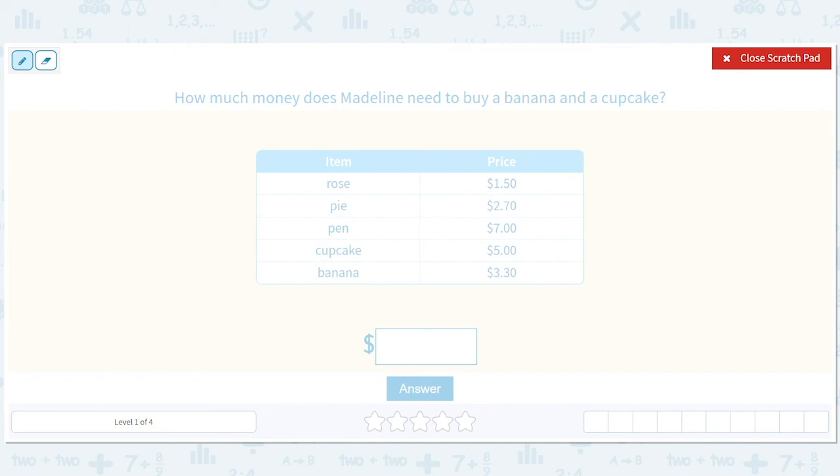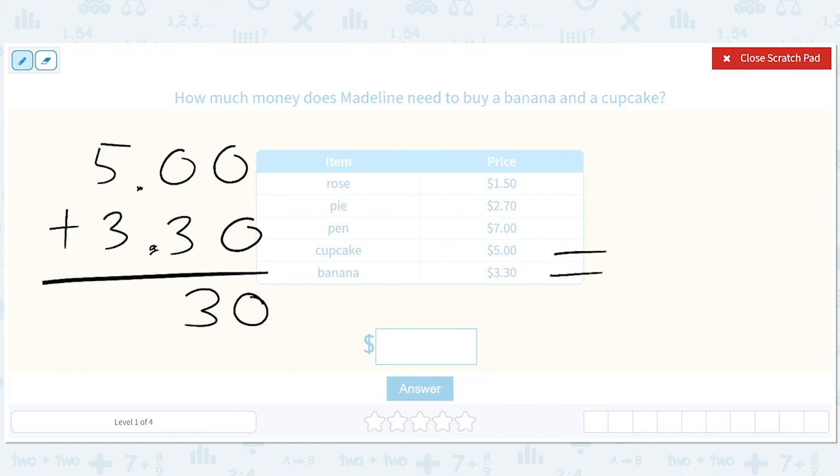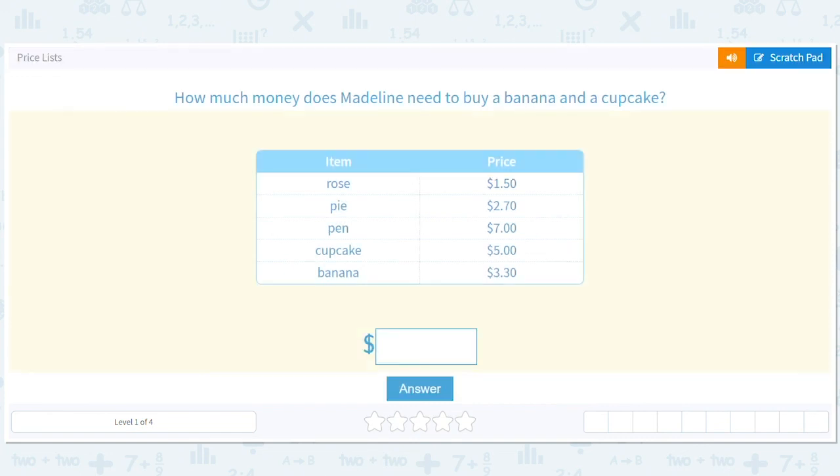How much money does Madeline need to buy a banana and a cupcake? Here's the banana, here's the cupcake. We're going to take the five dollars and add the $3.30. We line up the decimal, add zero, zero, three, zero - the decimal stays lined up - and we get $8.30. You could probably just do that in your head, right? Five dollars plus three thirty is eight dollars and thirty cents. That's a really expensive banana, by the way.